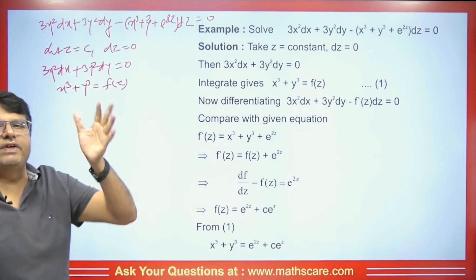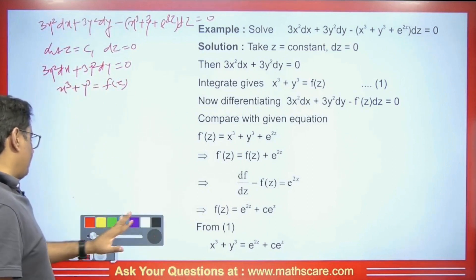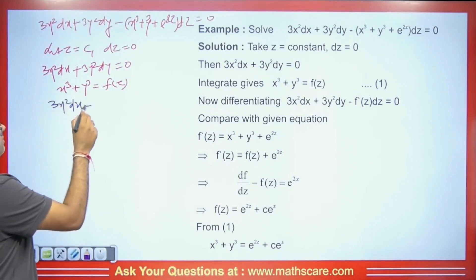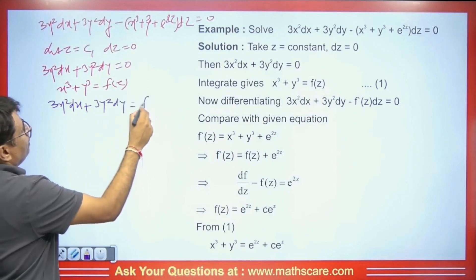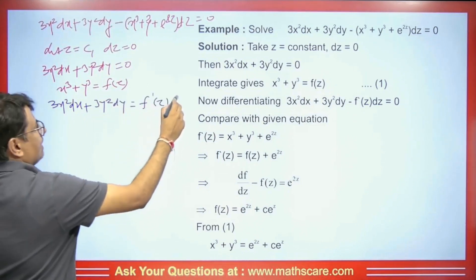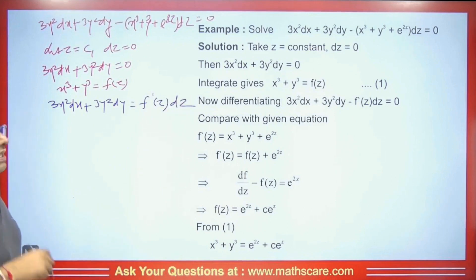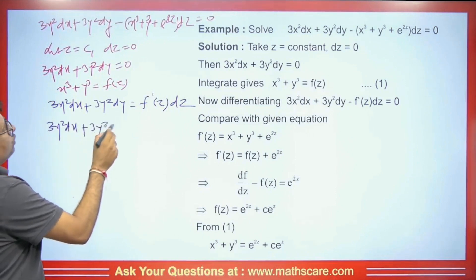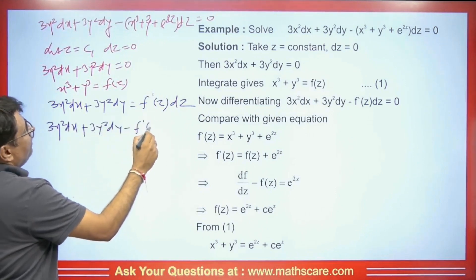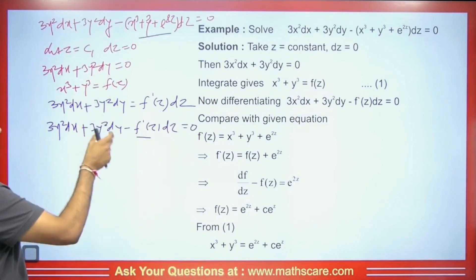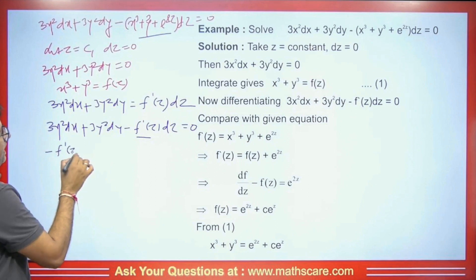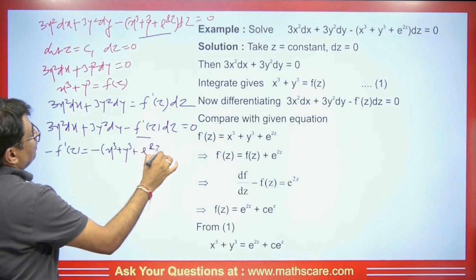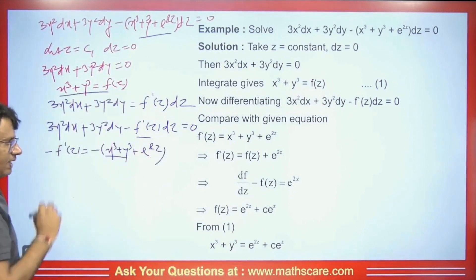Now we differentiate this again. When we differentiate, we get 3x²dx + 3y²dy = f'(z)·dz. Rearranging, this becomes 3x²dx + 3y²dy − f'(z)·dz = 0. Comparing with the given equation, we get −f'(z) equal to −(x³ + y³ + e^(2z)). Since x³ + y³ = f(z), minus cancels with minus and we get f'(z) = f(z) + e^(2z).